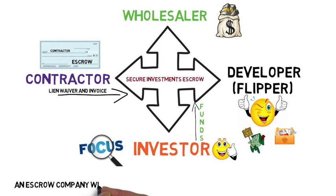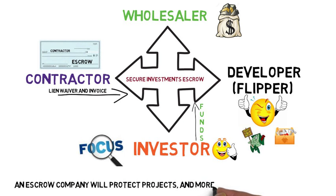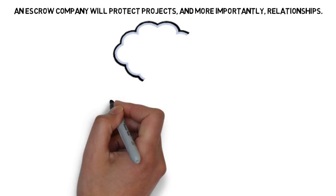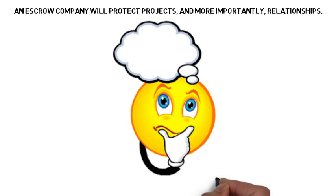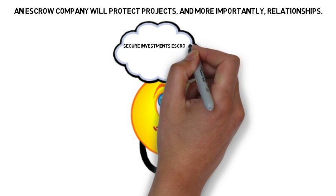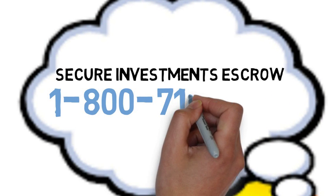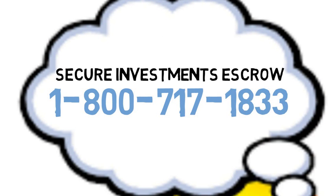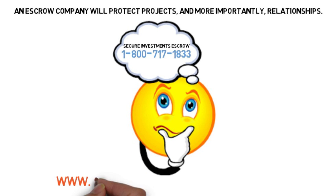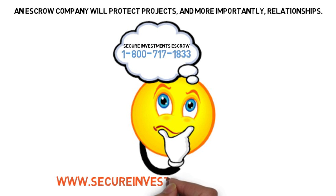No real estate transactions involving multiple parties should ever be attempted without a non-affiliated party protecting all of the involved parties. Until now, investors have had no other options. My question is, why hasn't anybody thought of this sooner? Here's the number: 1-800-717-1833, or go to secureinvestmentsescrow.com.